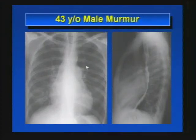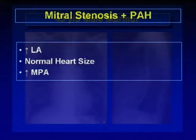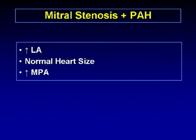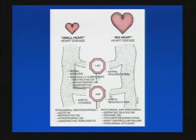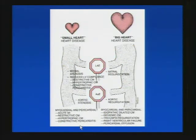Another finding commonly seen in patients with chronic mitral stenosis is an enlarged main pulmonary artery, consistent with pulmonary arterial hypertension — enlarged left atrium, normal heart size, enlarged main pulmonary artery. To review small heart disease: left atrial enlargement suggests mitral stenosis; aortic enlargement suggests aortic stenosis; and if there are no signposts, think myocardial and pericardial diseases such as acute myocardial infarction, restrictive cardiomyopathy, hypertrophic cardiomyopathy, and constrictive pericarditis.